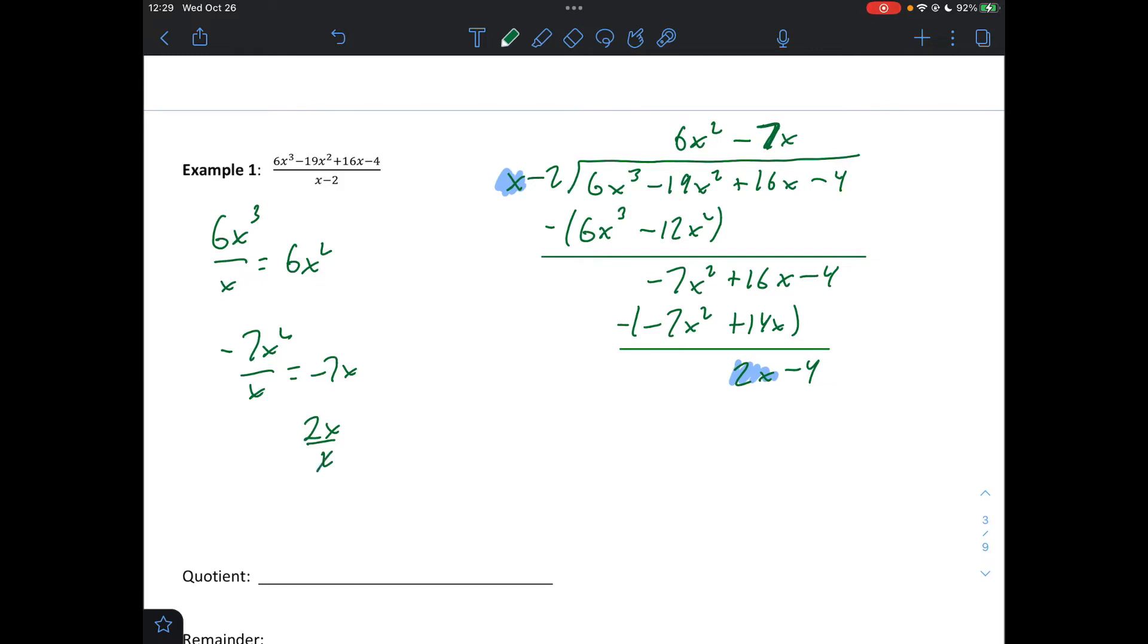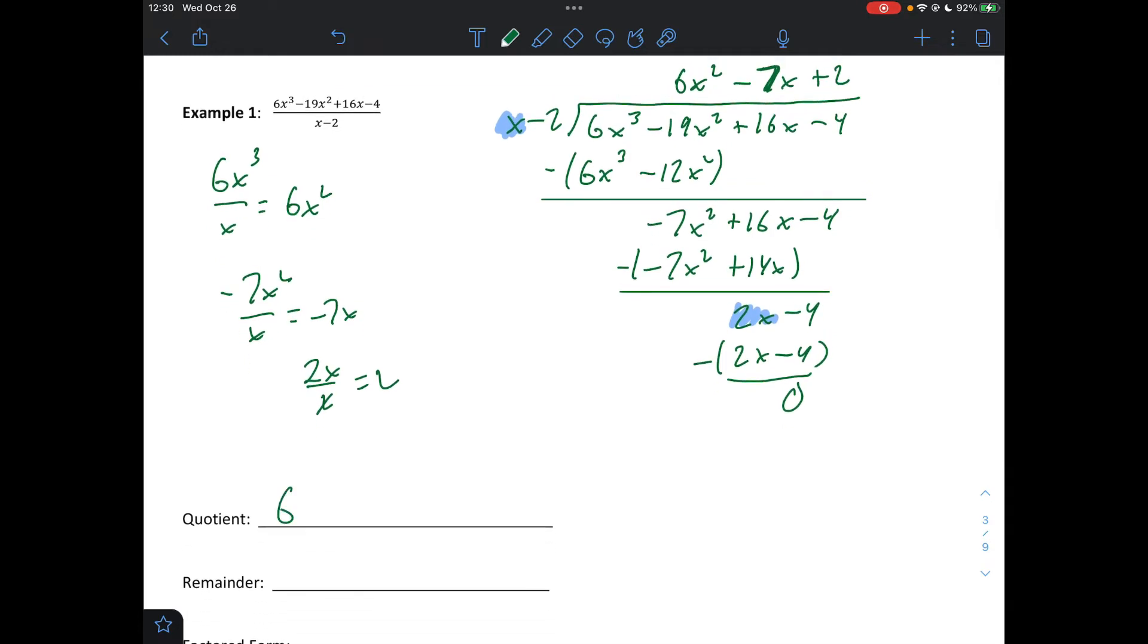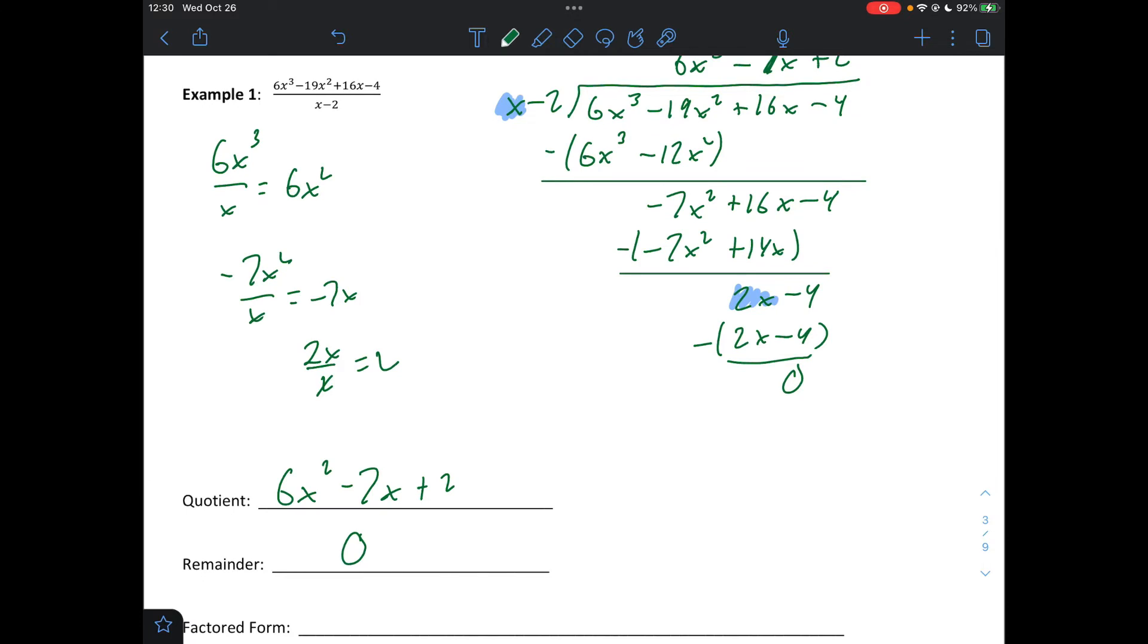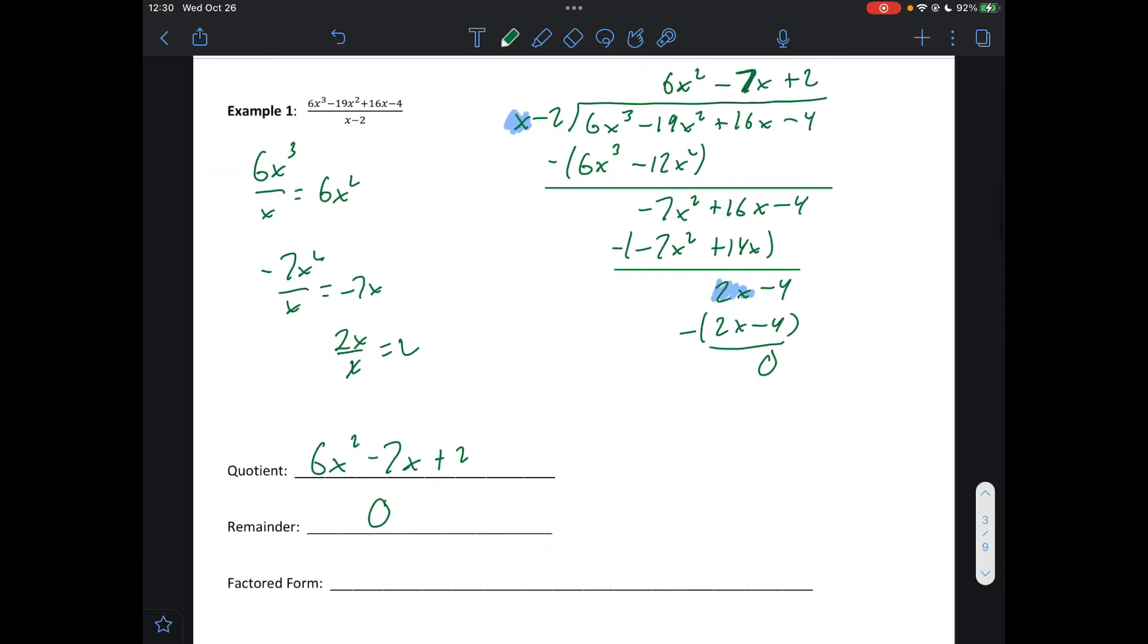So 2x over x is 2. So plus 2. Multiply 2 times x minus 2. And if this happens, that means it's perfectly divided. It's a perfect factor of that original equation. So we could write 6x cubed, sorry, 6x squared minus 7x plus 2 is our quotient, and our remainder is 0. And then we can write the original expression in factored form of x minus 2 times 6x squared minus 7x plus 2.